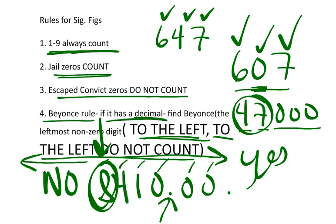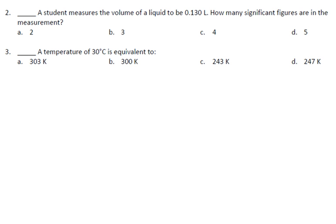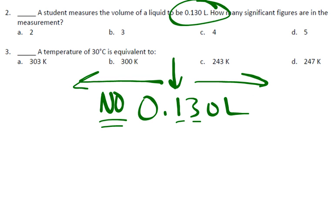So I'm going to apply that rule as we go through some of the sig fig questions that I have. So if you look right here, student measures the volume. If you notice right there, the first thing I see is 0.130 liters. I see a decimal. It means I have to find Beyonce. Beyonce is the leftmost non-zero digit. To the left, to the left, no, it doesn't count. To the right, a zero would count. We know the one and the three already count. That zero is going to count, so that's what makes the three significant figures for that one.